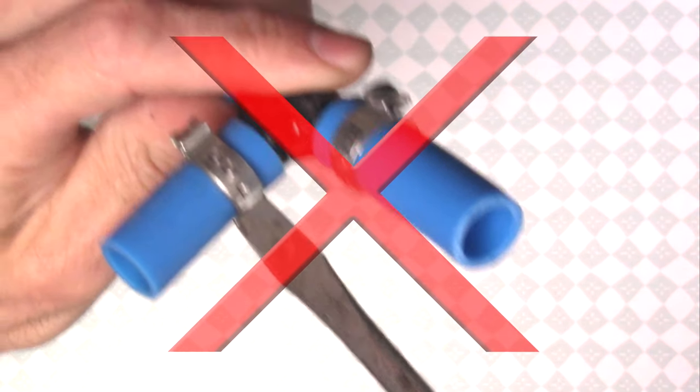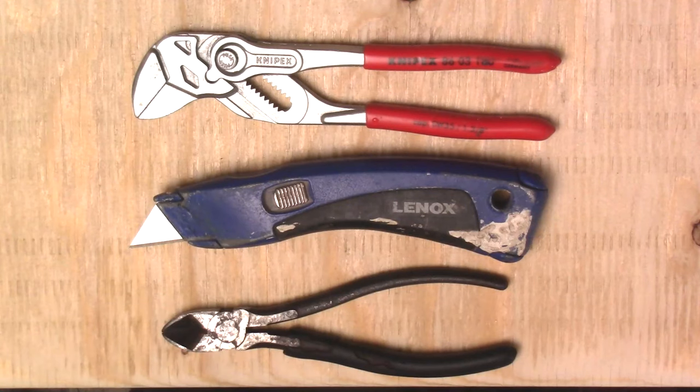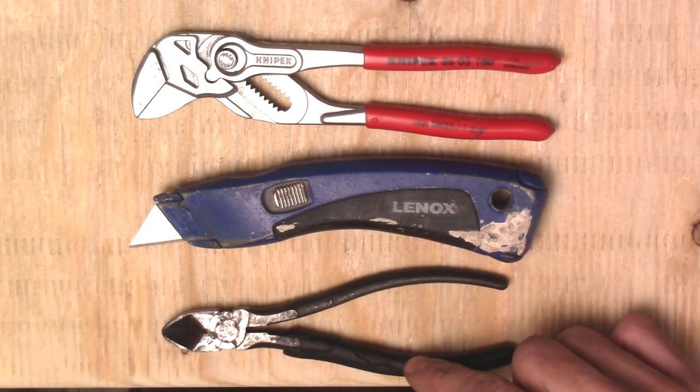What I don't want to do is take a screwdriver and try to pry open the clamp, because it doesn't work. What does work is using these three tools: a pair of pliers, a brand new razor blade, and some old side cutters.